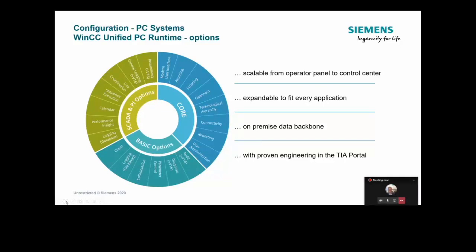The SCADA and plant intelligence options are only available on a PC-based platform. These include logging based on a relational database — the ability to add Microsoft SQL — and plant intelligence options like performance insight, calendar option, sequence execution, and line coordination. There's also the ability to do central logging as a dedicated central historian, and redundancy. A couple of these options say 'in excess of v16,' meaning they are not released with the initial v16 release — specifically redundancy, central logging, diagnostics, and audit will come a little bit later.